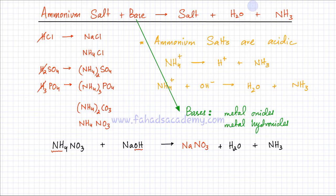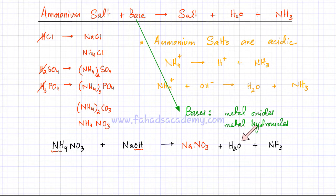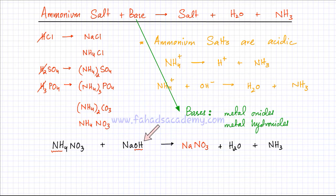The ammonium ion got converted into ammonia gas; the OH- ion got converted into water molecules. The leftover ions — sodium and nitrate — form the salt, sodium nitrate. So this is your balanced reaction: ammonium nitrate reacting with a base produces sodium nitrate, water, and ammonia gas.